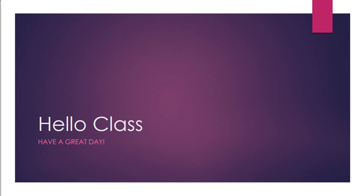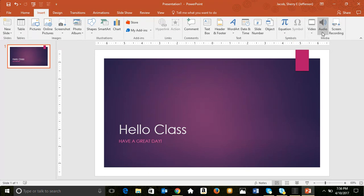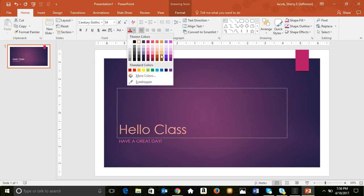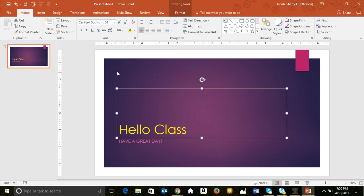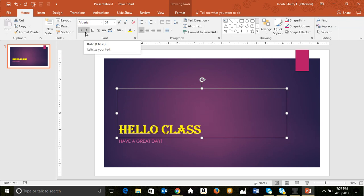To get out of presentation or slideshow mode, use the Escape key — it takes you back into design mode. If you wanted to add audio and video, you use the Insert tab and in the Media group you can add video, audio, or even do a screen recording. Adding and formatting text allows you to change color, font, and make text bold.